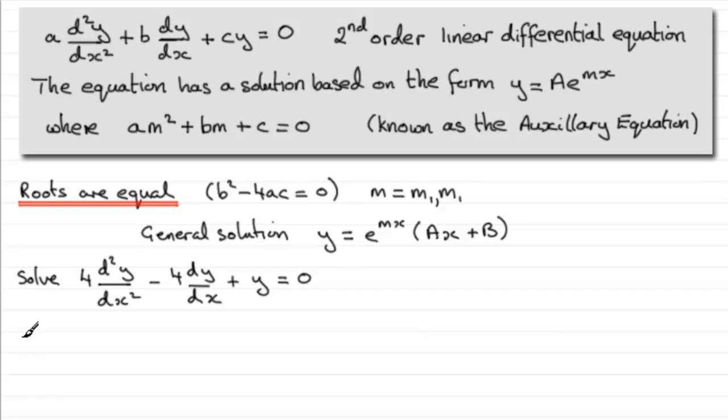to do is set up the auxiliary equation. We take our coefficients here: 4, minus 4, and 1, and then